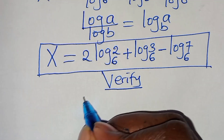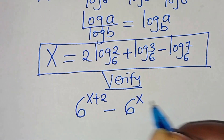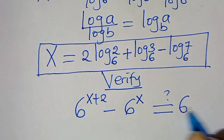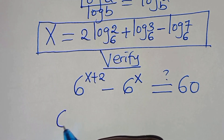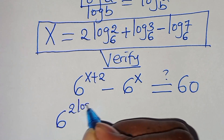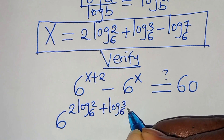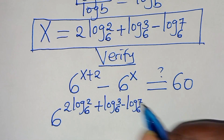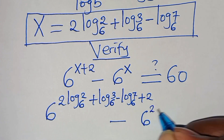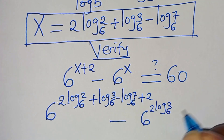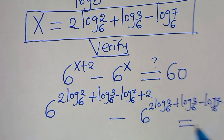If you recall, we had 6 to the power of x plus 2, subtract 6 to the power of x, which should give us a value of 60. Substituting the value of x, this implies 6 to the power of (2·log base 6 of 2 + log base 6 of 3 − log base 6 of 7 + 2), subtract 6 to the power of (2·log base 6 of 2 + log base 6 of 3 − log base 6 of 7). This should give us a value of 60.